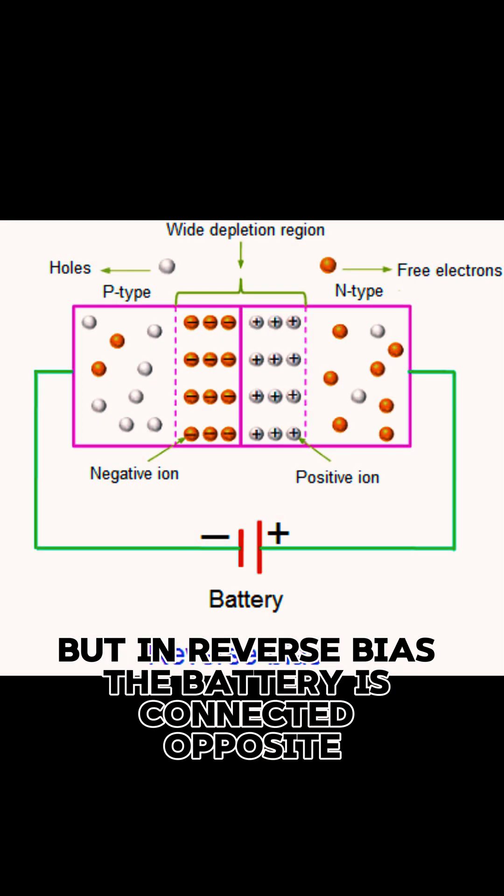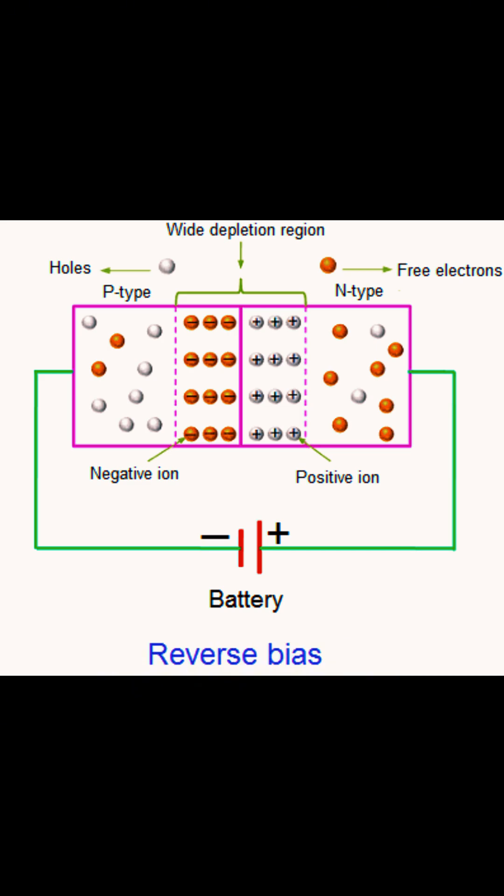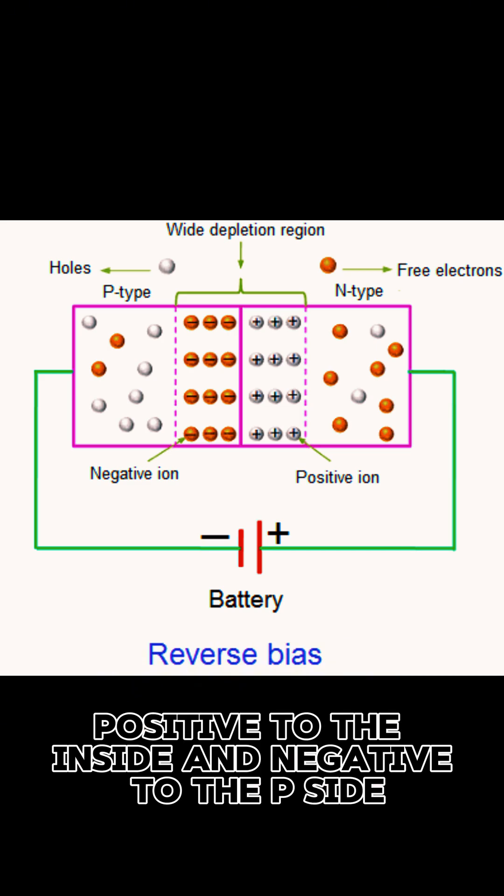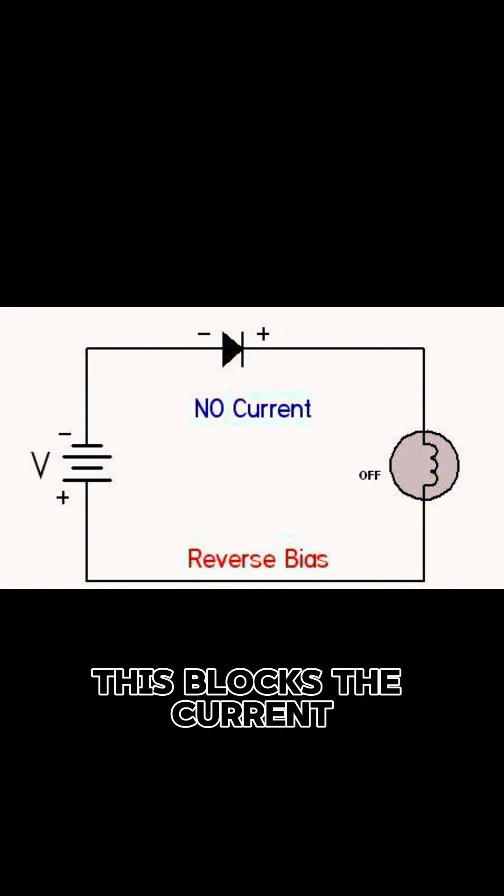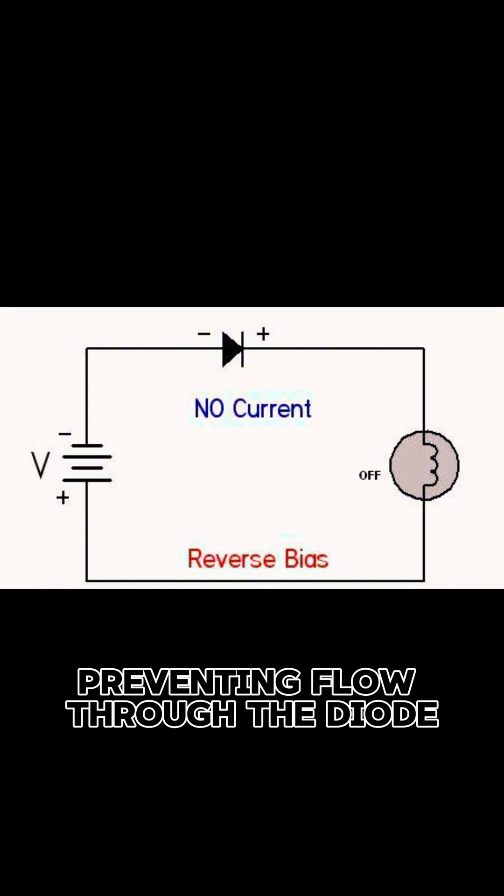But in reverse bias, the battery is connected opposite, positive to the N-side and negative to the P-side. This blocks the current, preventing flow through the diode.